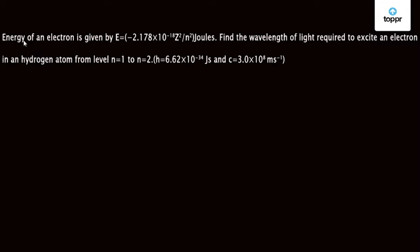Today we are going to discuss a question which was asked in JEE 2013, from the chapter atomic structure. The question states: energy of an electron is given by E = −2.178 × 10⁻¹⁸ × Z²/n² joules. Find the wavelength of light required to excite an electron in a hydrogen atom from level n = 1 to n = 2. Given: h = 6.62 × 10⁻³⁴ J·s and c = 3 × 10⁸ m/s.